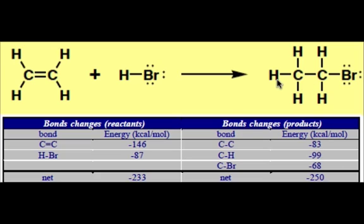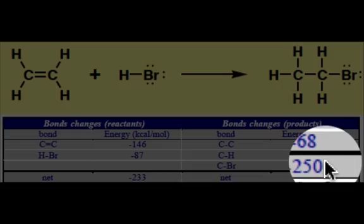We've also created a carbon-hydrogen single bond. That's put in the table at minus 99 kcals per mole. And then a carbon-bromine single bond as well of negative 68 kcals per mole. And those are the three bonds that were made in the course of this reaction. Add those up, get negative 250 kcals per mole.